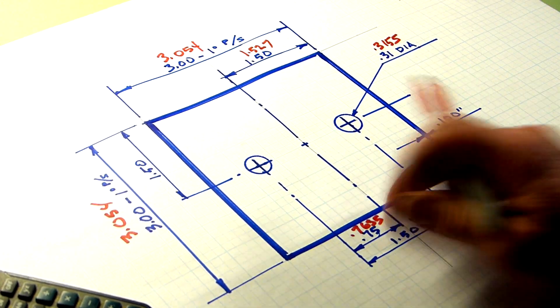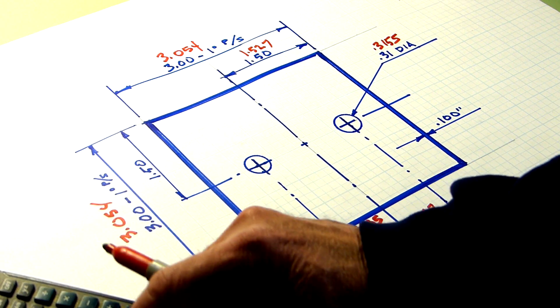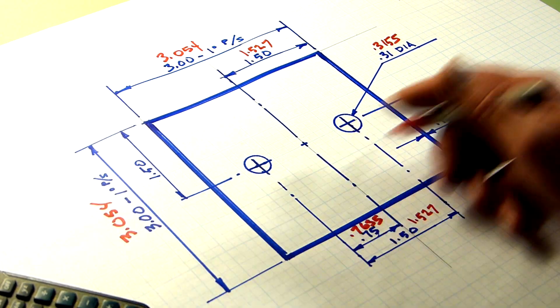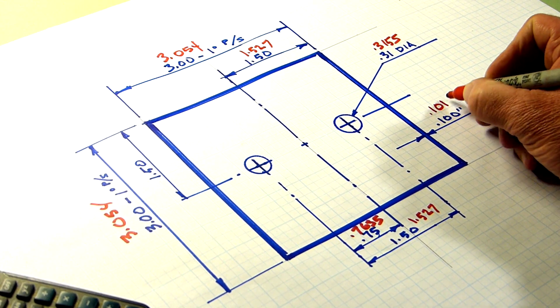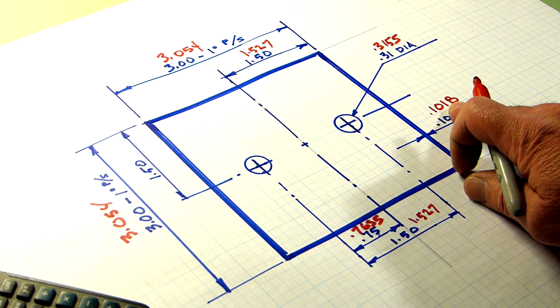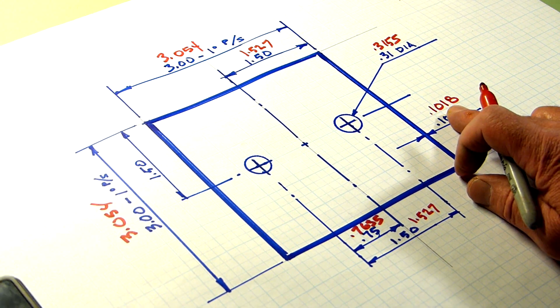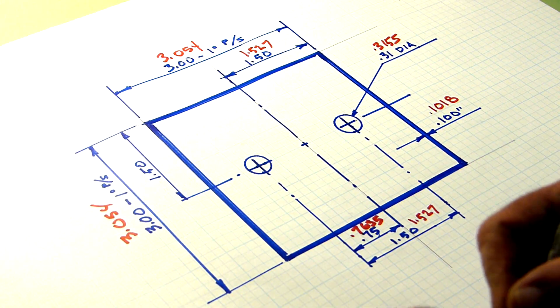And the 100,000 wall stock times 1.018, about 102,000. To be perfectly accurate, 101,000 and eight-tenths. So that's a very basic explanation of shrinkage rates.